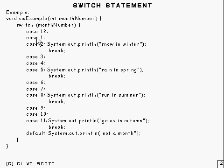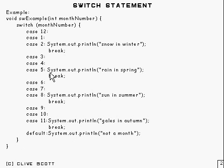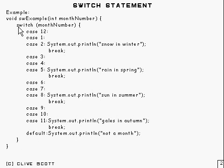The one it jumps to is based on this month number, and then it just prints out a relevant line there. That break there takes it out of the switch statement, and that's basically what a switch statement does. If it's none of these alternatives down here, then the default option is chosen, and that basically is a switch statement.